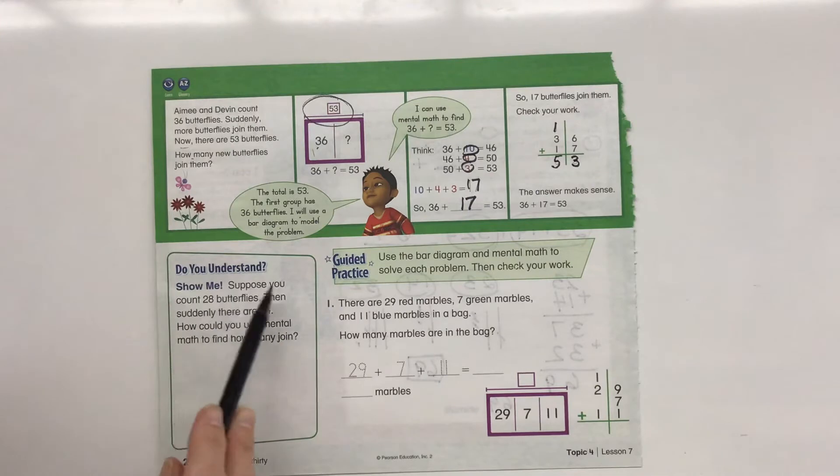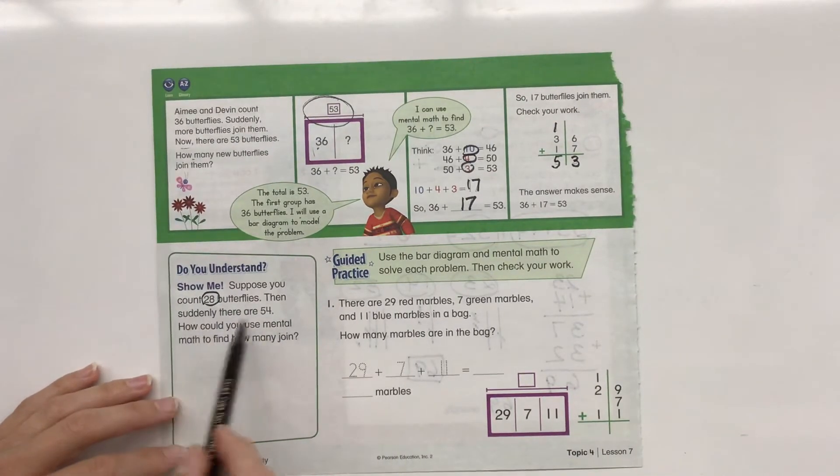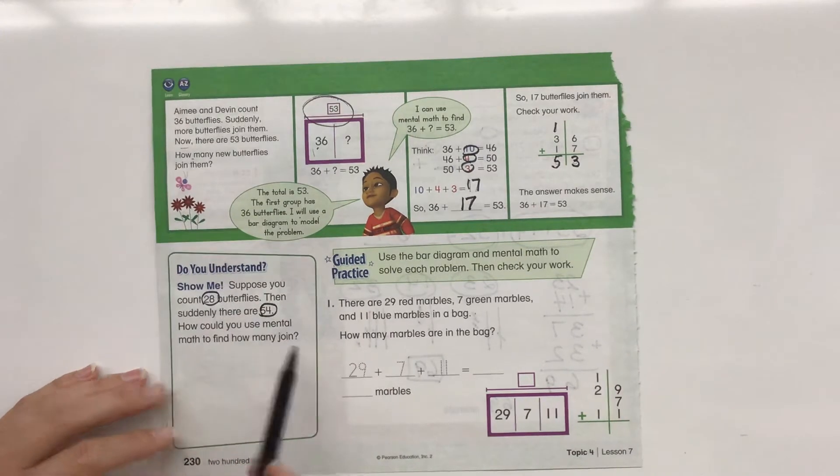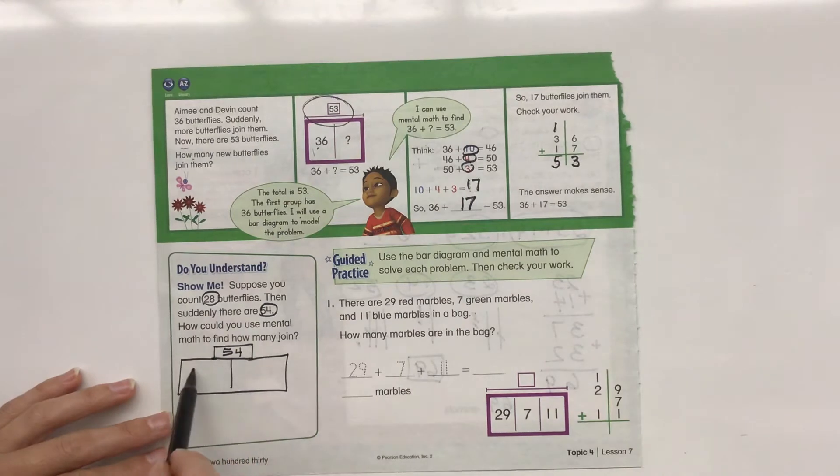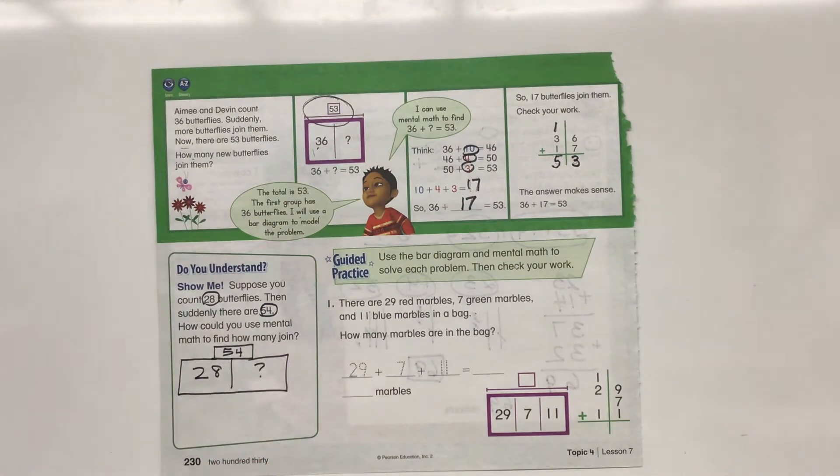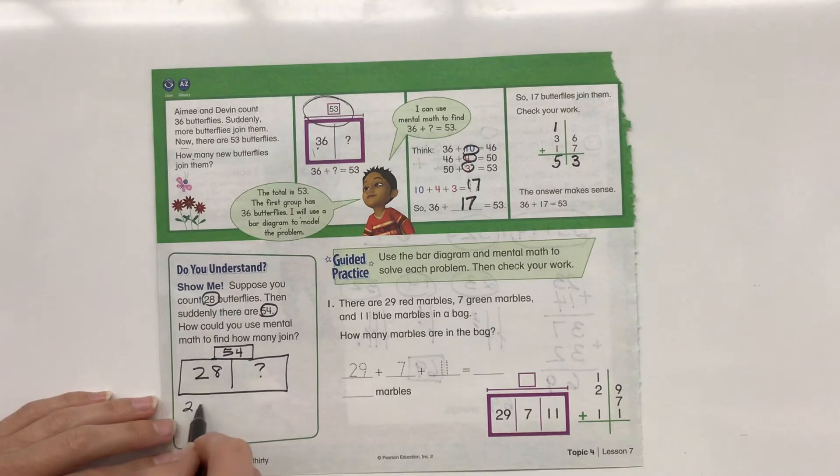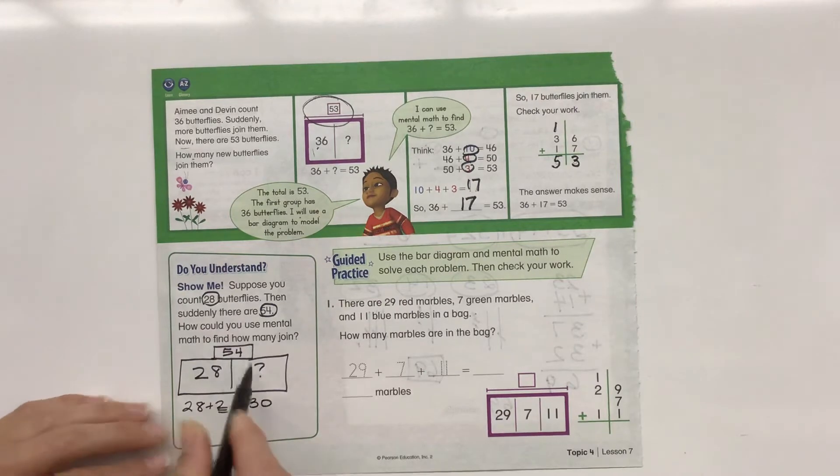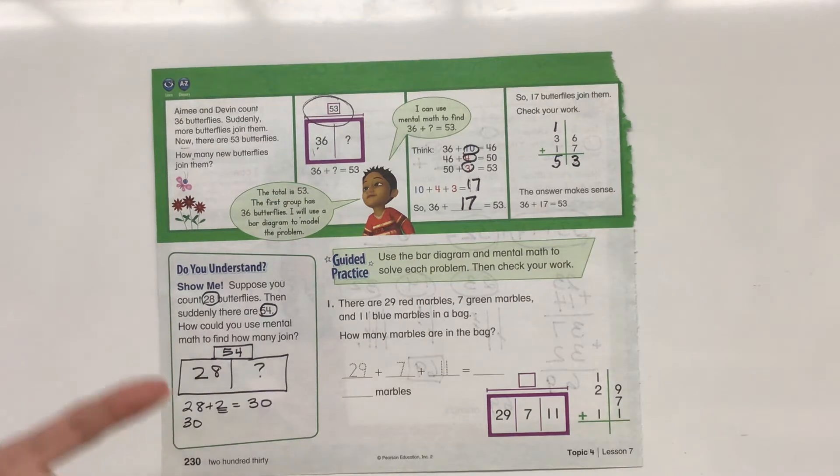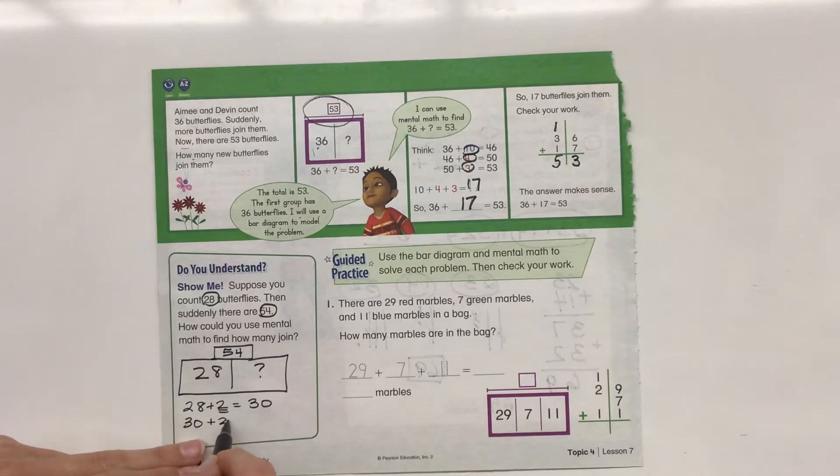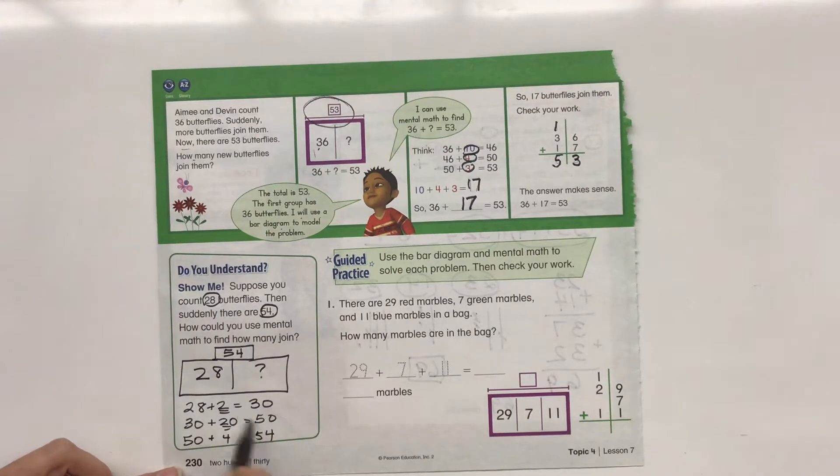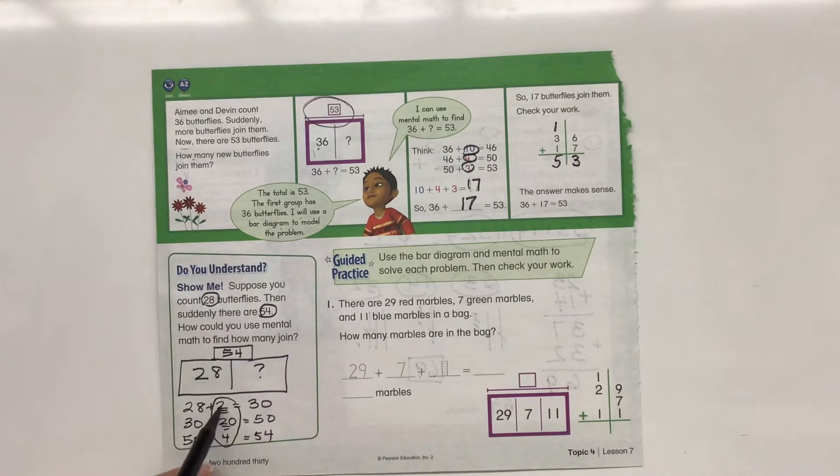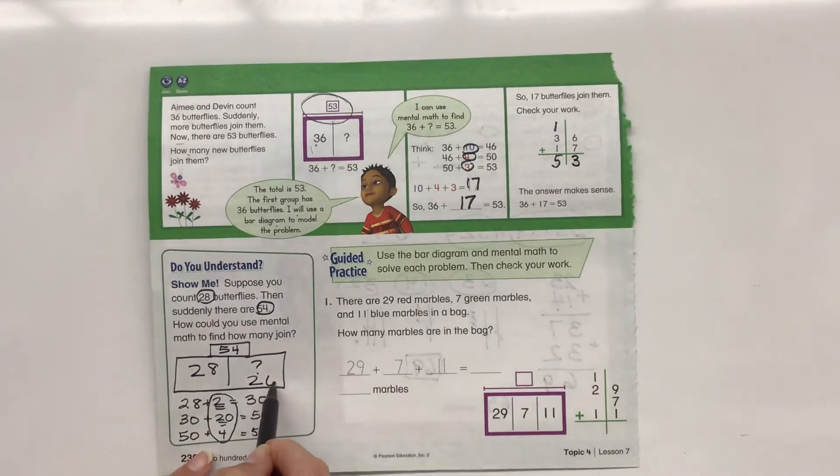Do you understand? Show me. Suppose you count 28 butterflies, then suddenly there are 54. How could you use mental math to find how many join? I'm going to do a little bar diagram first. So we have 54 total. We had 28 plus something. 28 plus something gets us to 54. I could add 2. 28 plus 2 equals 30. And then I have to get to 54. 30 plus 10 is 40 plus 10 is 50. So plus two groups of 10 equals 50, but we have to get to 54. So 50 plus 4 equals 54. Now these are what we added together: 20 plus 2 is 22 plus 4 is 26. We know the answer is going to be 26.